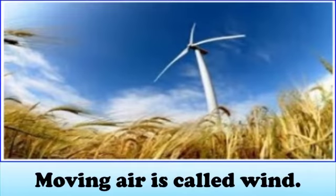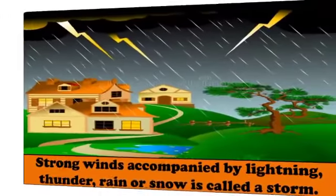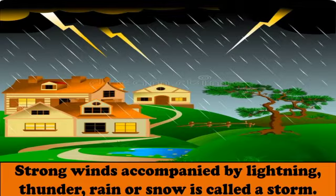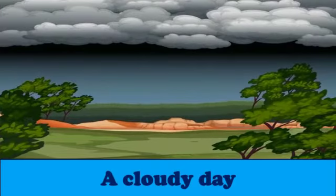Next, windy and cloudy days. What is wind? Moving air is called wind, and when the wind blows slowly, it is called a breeze. Strong winds accompanied by lightning, thunder, rain or snow is called a storm. Storms can cause a lot of damage. The sun appears to hide on cloudy days and the sky is full of clouds. It is cooler on windy and cloudy days than on sunny days.